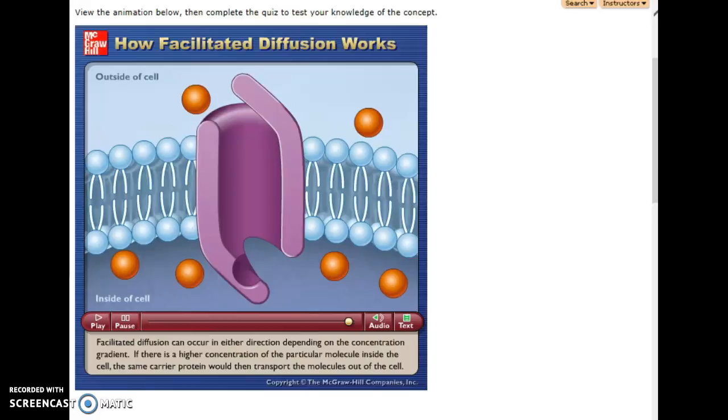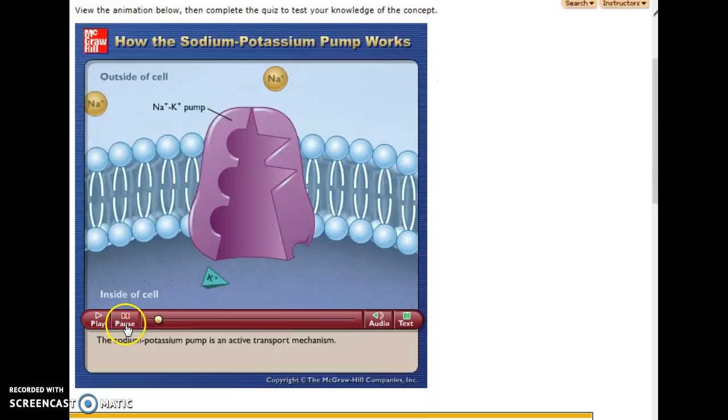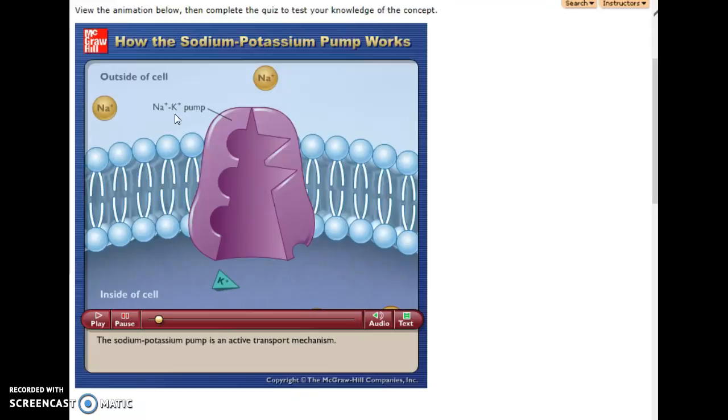We're going to look at an example of active transport. The first example that we will mention is what are known as pumps. The term pump indicates that you're using energy. Here is an example. It's a sodium potassium pump. They will diffuse from high to low via these channels. They don't require energy. In a pump we actually go from low to high. So this is requiring energy.